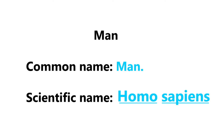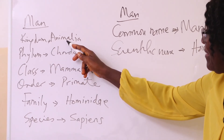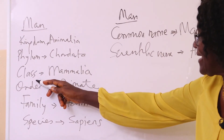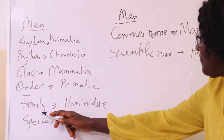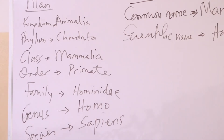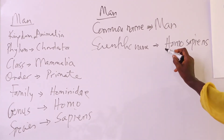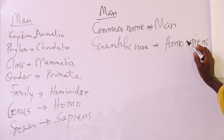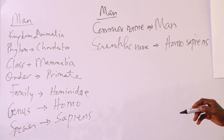For instance, man has the common name 'man' and the scientific name Homo sapiens. Looking at the full classification: kingdom Animalia, phylum Chordata, class Mammalia, order Primate, family Hominidae, genus Homo, species sapiens. The scientific name is based on the genus and species names, so the scientific name of man is Homo sapiens.